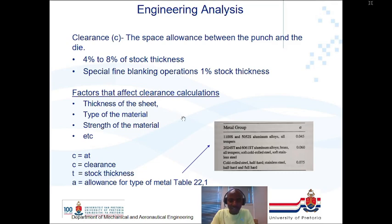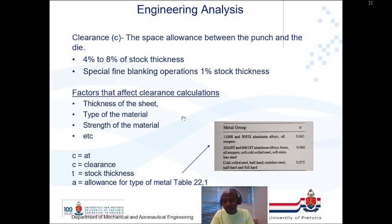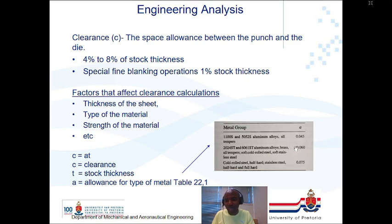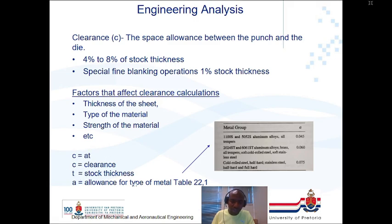Clearance is defined as c = a × t, where t is the thickness of the stock in millimeters and a is the allowance factor for the type of metal, which can be found in Table 22.1 of the textbook. The allowance factor accounts for the material type and its thickness, and practical experience helps determine the most applicable factor for a given situation.